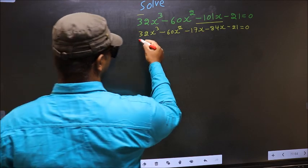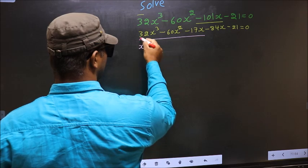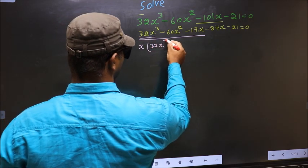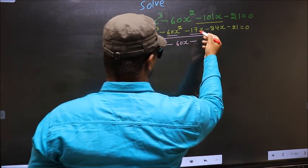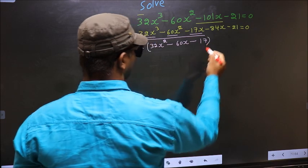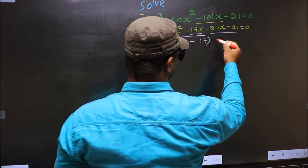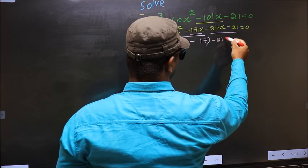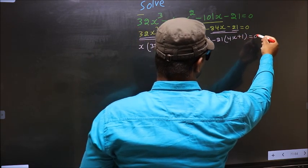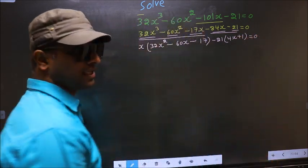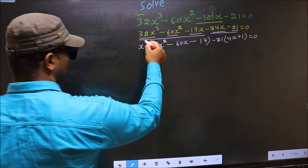What can be taken out common from the first three terms is x. So you get x times (32x² minus 60x minus 17). From the last two terms, what can be taken out common is minus 21, giving minus 21 times (4x plus 1) equal to 0.